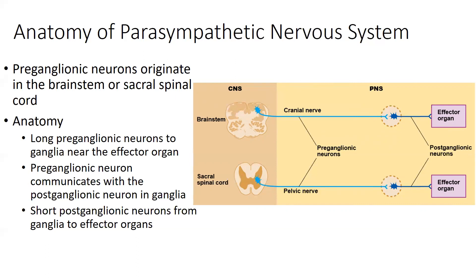In the parasympathetic system, the ganglia are not close to the spinal cord — they are closer to the effector tissue. The ganglia are in circles in the image and they are positioned closer to the affected organ. You don't have to know the names of those ganglia specifically, but you need to know their location because they're much closer to the actual affected organ.